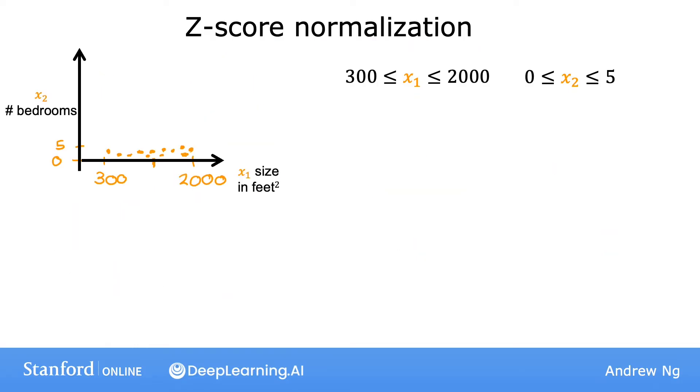There's one last common rescaling method called z-score normalization. To implement z-score normalization, you need to calculate something called the standard deviation of each feature. If you don't know what a standard deviation is, don't worry about it. You won't need to know it for this class. Or if you've heard of the normal distribution or the bell-shaped curve, sometimes also called the Gaussian distribution, this is what the standard deviation for the normal distribution looks like. But if you haven't heard of this, you don't need to worry about that either.